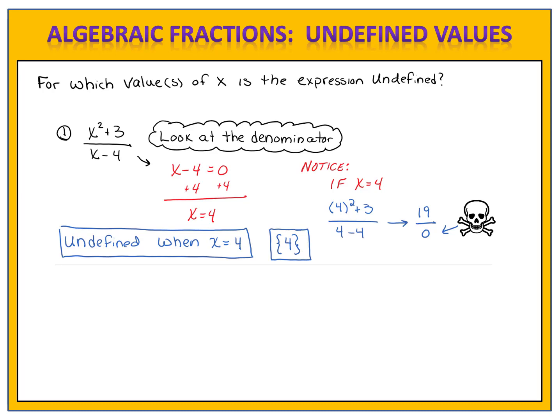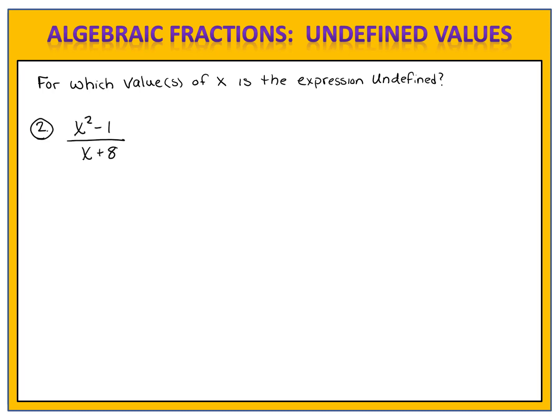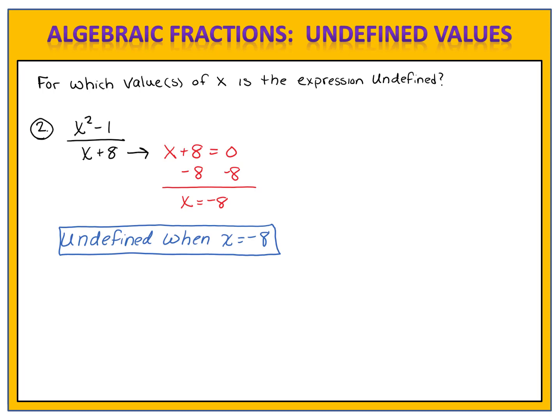Let's look at another example for you to try. We have an algebraic fraction: x squared minus 1 divided by x plus 8. Can you identify the values that make this expression undefined? Please pause the video and give it a try. Let's compare answers. We want to know what values of x cause the denominator to equal zero. We look at the denominator, x plus 8, set it equal to zero, solve for x, and find that x equals negative 8. This fraction is undefined when x equals negative 8. We could also write this using set notation, putting negative 8 in the squiggly braces.